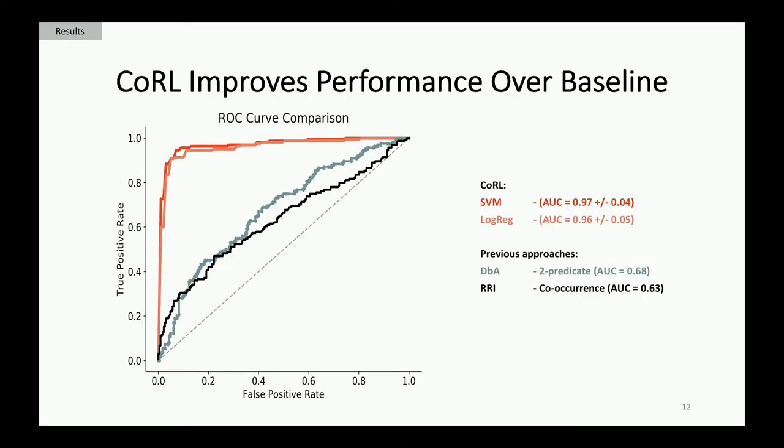Compared to our previous baselines, I'm showing DBA — a method applying discovery patterns thought to be indicative of adverse effects — and RI, which stands for reflective random indexing, a co-occurrence-based approach that doesn't take relational assertions into account. Whether you deploy CORAL with a support vector machine or logistic regression, you get significantly better performance over either of those baseline approaches. Random performance is shown as the dotted line. This is on the OMOP reference set.